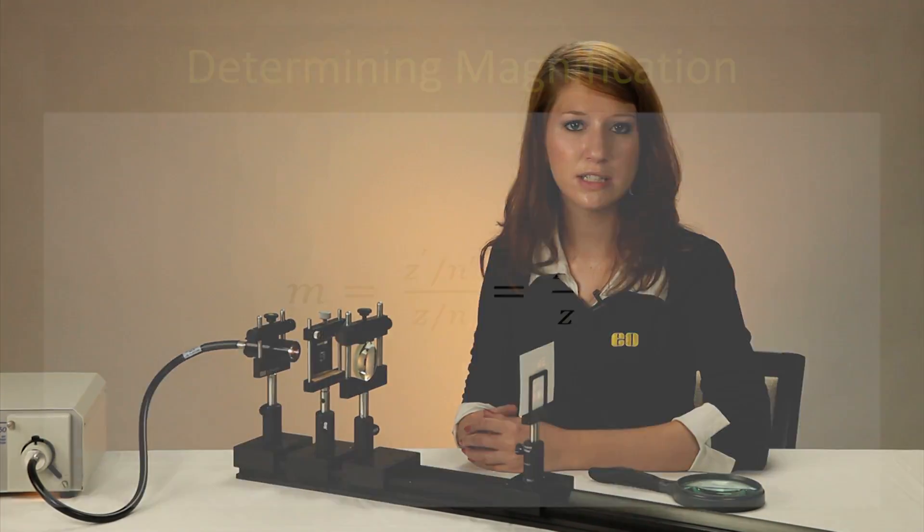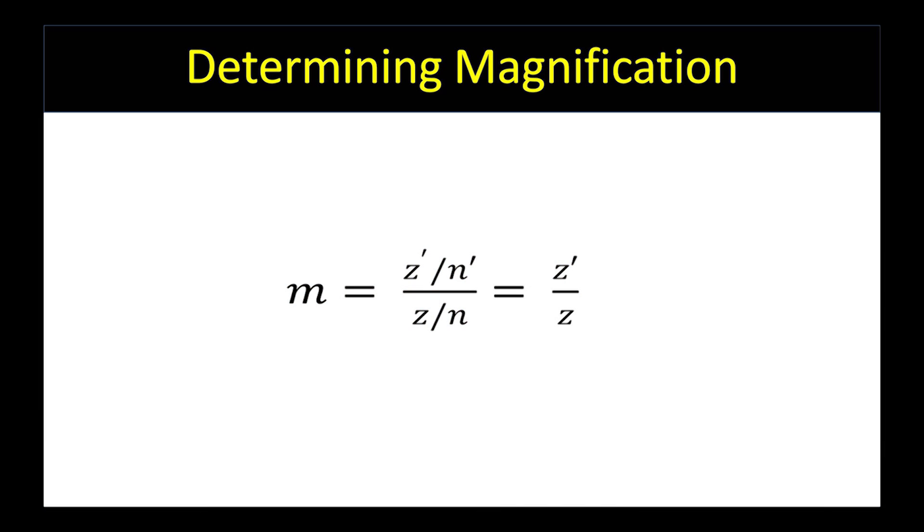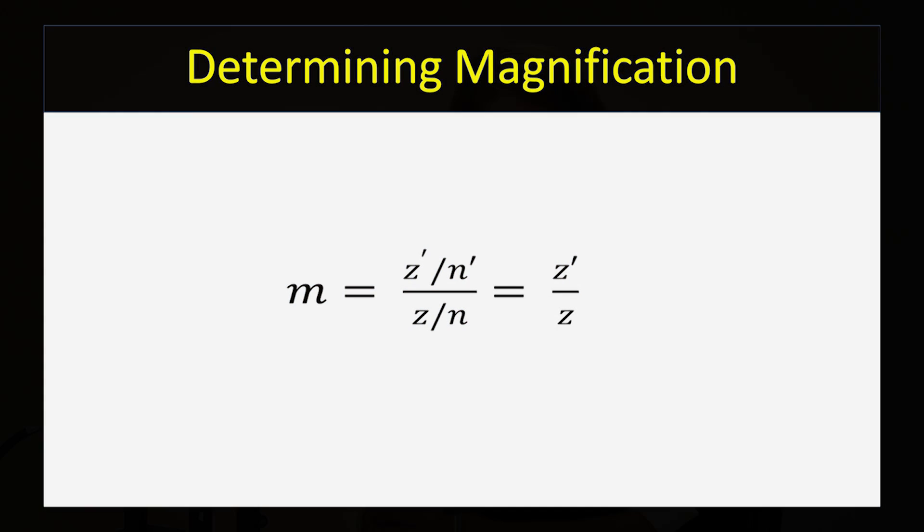The magnification can be found by taking the ratio of the image distance to the object distance. A negative magnification indicates the image will be inverted. A positive magnification indicates the image will be upright. Since we have a negative distance and a positive distance for our setup here, we have an inverted image, which you can see here.